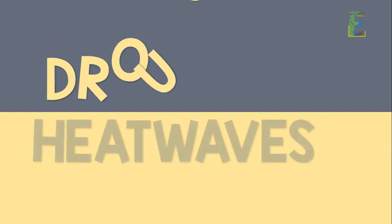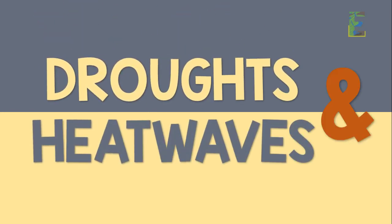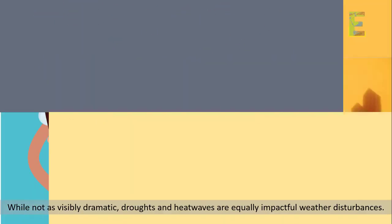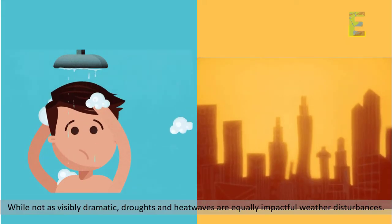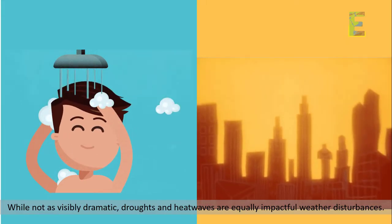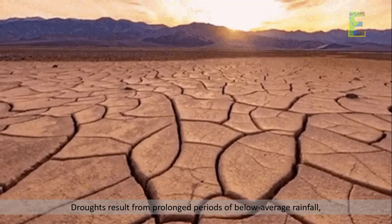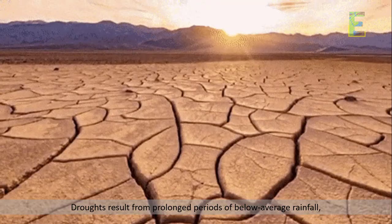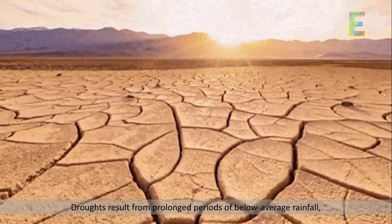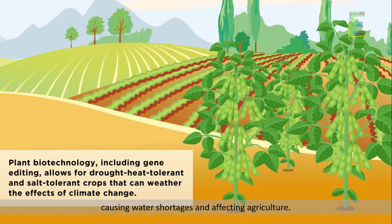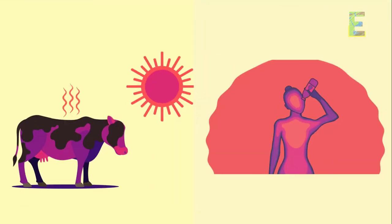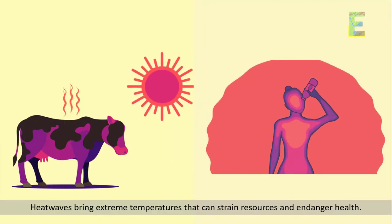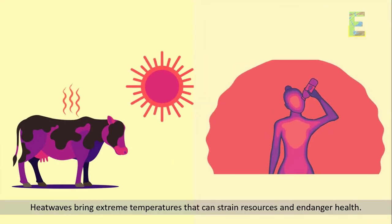While not as visibly dramatic, droughts and heat waves are equally impactful weather disturbances. Droughts result from prolonged periods of below-average rainfall, causing water shortages and affecting agriculture. Heat waves bring extreme temperatures that can strain resources and endanger health.